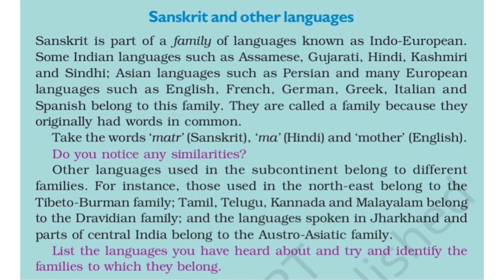Upamahadeep mein dusre bhasha parivaron ki bhashaen bhi hain. For example, north-east mein Tibeto-Burman family ki languages boli jaati hain. Tamil, Telugu, Kannada, aur Malayalam — yeh sab Dravidian family ki languages hain. Jharkhand aur central India ke kai parts mein boli jaane waali bhashaen Austro-Asiatic family se belong karti hain.